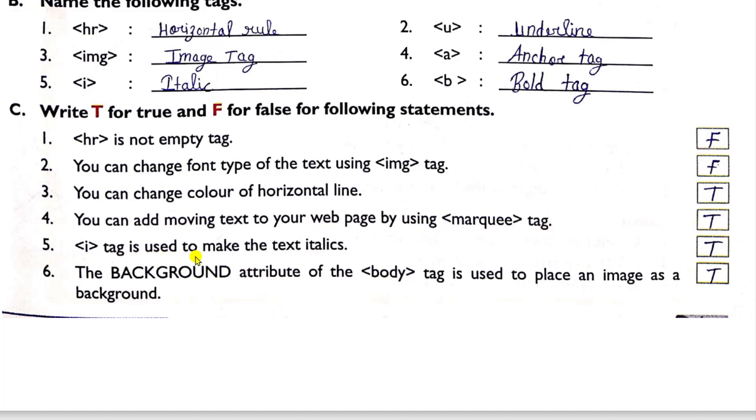Fifth, I tag is used to make the text italics. Answer is again true. And last one is the background attribute of the body tag is used to place an image as a background. Answer is true. This is your third question.